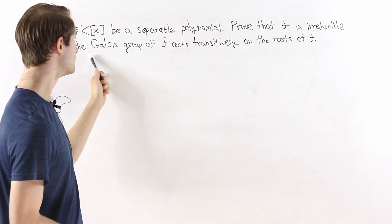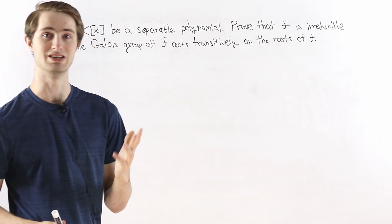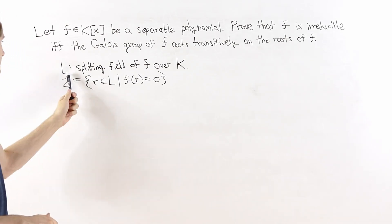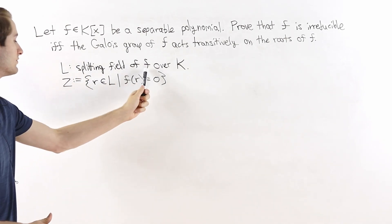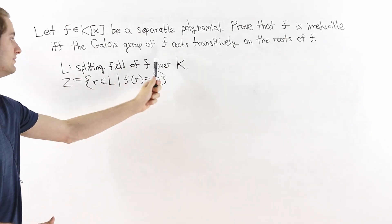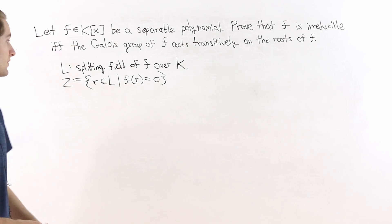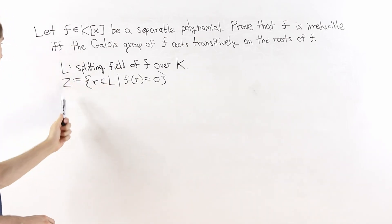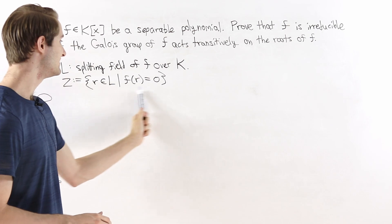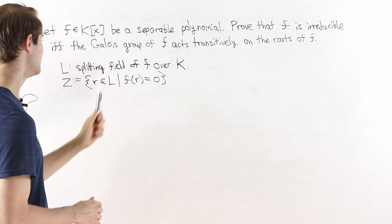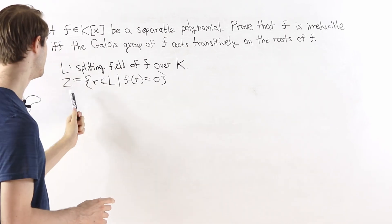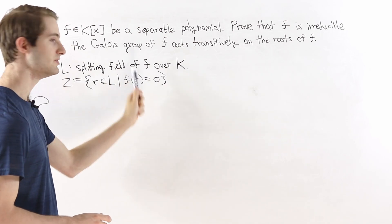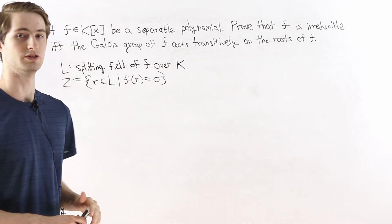Let's go over what the last part of the statement is saying. In order to talk about the Galois group, we first need to talk about the splitting field of our polynomial f over the base field k. We'll let L be that splitting field, and we define Z to be the set of roots of f in L — the elements of L such that f of that element equals zero.